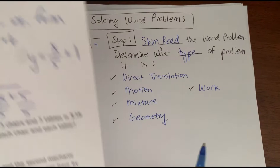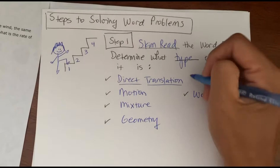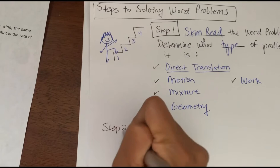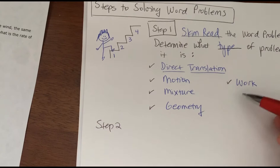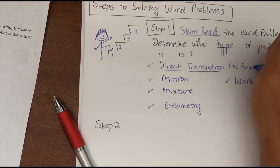When I read this problem, the correct answer is that it's a direct translation — there's no magic formula, it's just translating English to math. With direct translation we just need to translate from English to math. For motion, mixture, geometry, or work problems we would need a formula, but direct translation requires none.